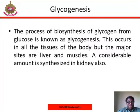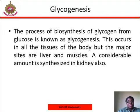Glycogenesis is a very essential process. It involves the biosynthesis of glycogen from glucose and occurs in all tissues of the body. The major sites of glycogenesis are the liver and muscles, and a considerable amount is also synthesized in the kidney. In the absence of glycogenesis, the tissues are exposed to excess glucose immediately after a meal and are starved of it at other times.